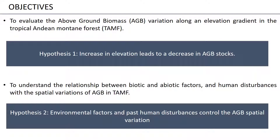That's why I want to evaluate the above-ground biomass variation along an elevation gradient in the tropical Andean Mountain Forest. My first hypothesis is that an increase in elevation leads to a decrease in above-ground biomass stocks. Additionally, I want to understand the relationship between biotic and abiotic factors and the effect of human disturbances on the spatial variation of above-ground biomass. My second hypothesis is that environmental factors and past human disturbances can control the spatial variations in biomass.